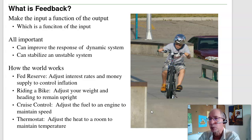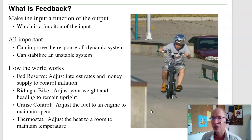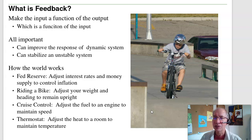Most systems in the real world are unstable — that's really how the real world works with feedback. For example, the Federal Reserve controls the inflation rate to about 2% by adjusting interest rates and the money supply. When you ride a bike, you adjust your steering and weight to stay upright; if you don't, the bike falls over. Cruise control on your car, the thermostat in your house — feedback keeps the temperature constant in spite of the sun, clouds, day, and night.